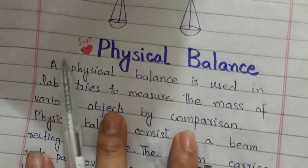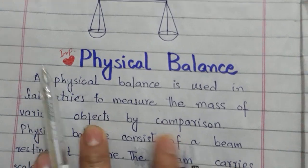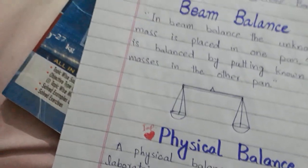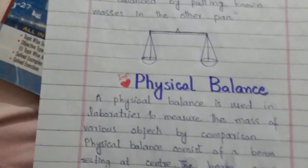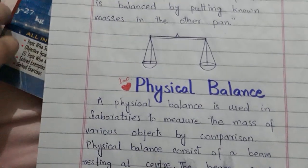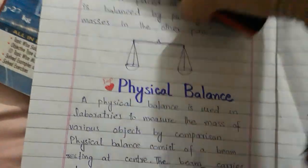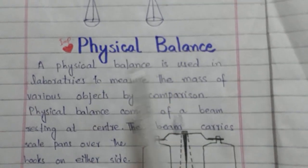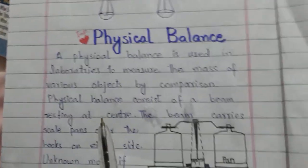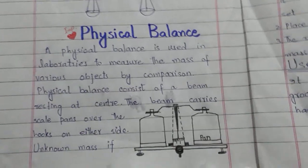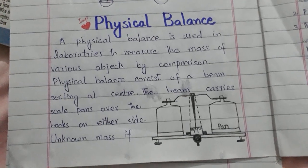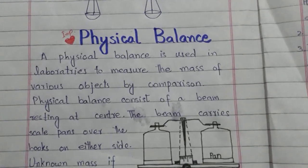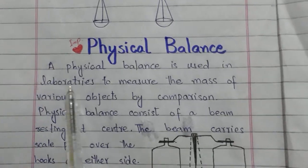Next, we have the physical balance. Physical balance is much like a beam balance, but it is much more accurate. It is used in laboratories and is different from a regular beam balance because it is very precise and accurate.